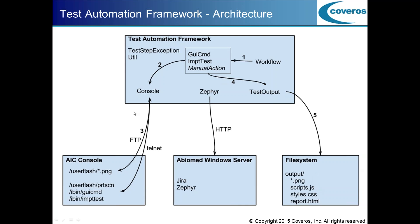That's the flow of how the framework works. A couple of other classes I didn't mention: one for representing an exception with a test step, and a util class that has general utilities. There's also one for interacting with Zephyr, which is a JIRA add-on for test management. There's a task we started but didn't complete to put test results into Zephyr so they could be more easily reviewed. That's still in progress and isn't actually linked with the framework, which is why it's cut off and isn't linked to anything else in the flow.